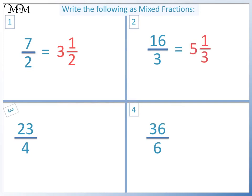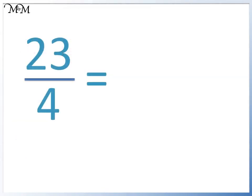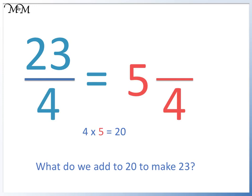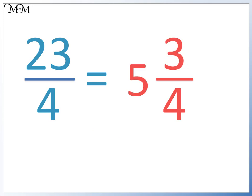Question 3. 4 goes into 23 5 times. We have 3 more to make 23. 23 quarters equals 5 and 3 quarters.